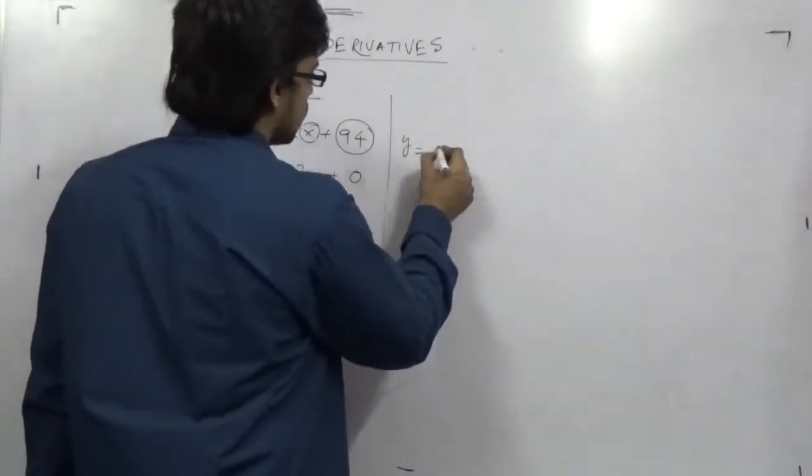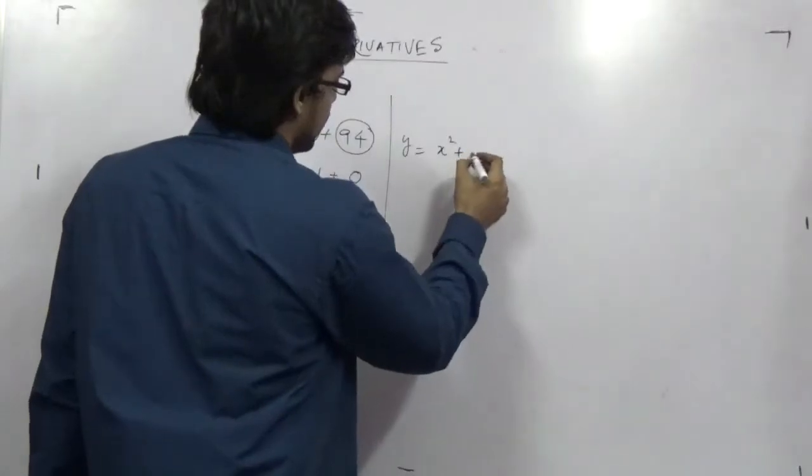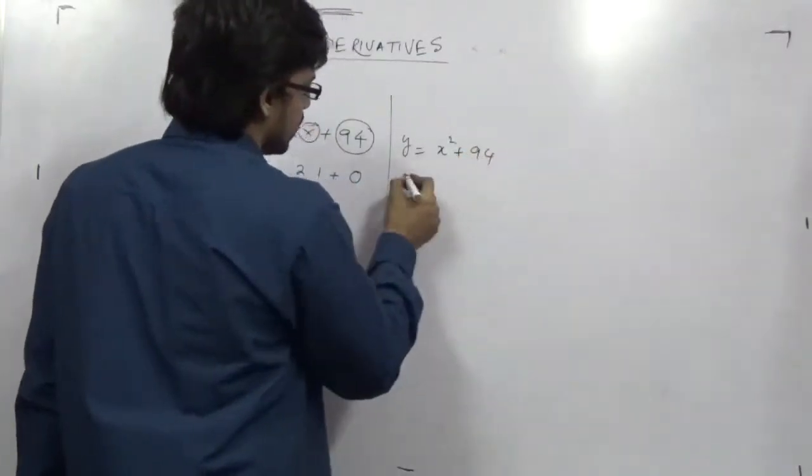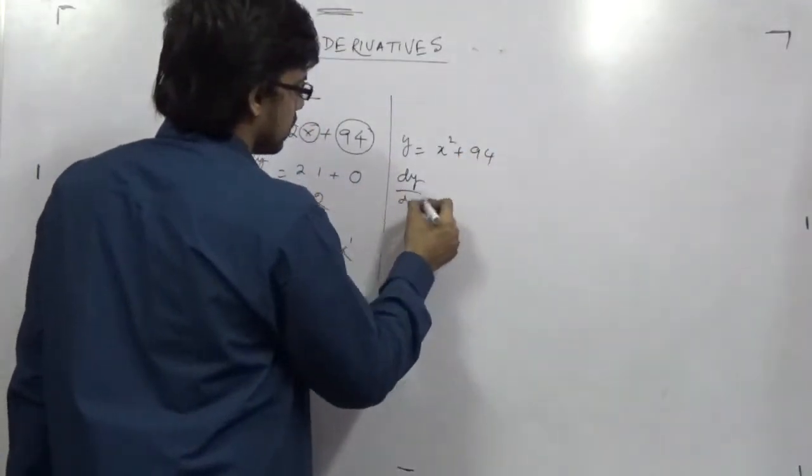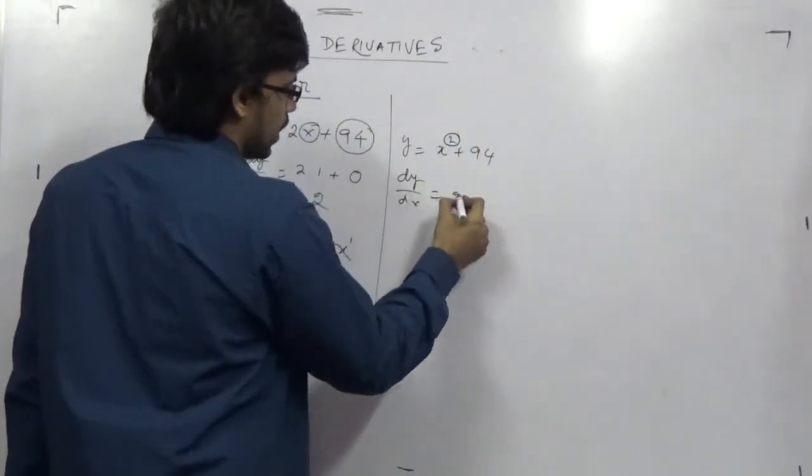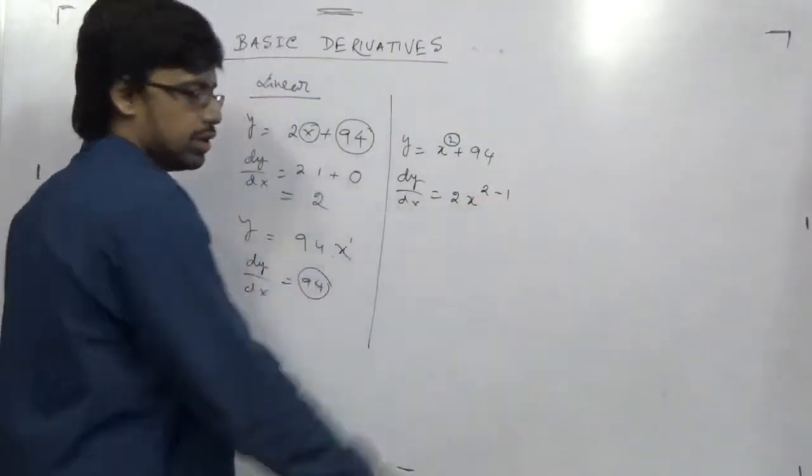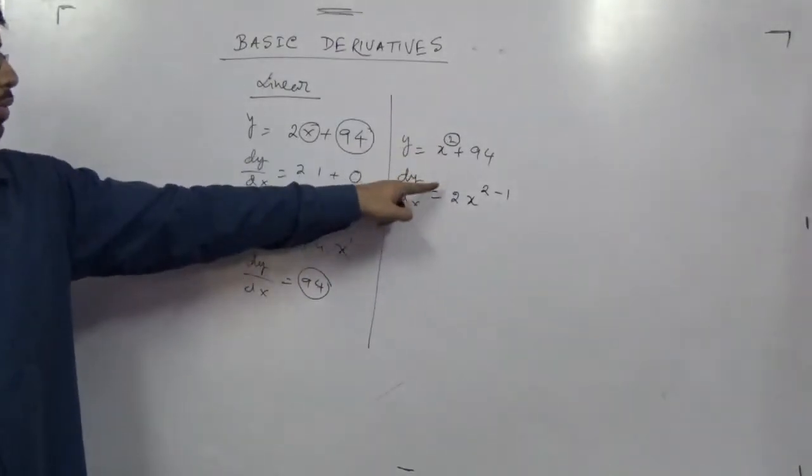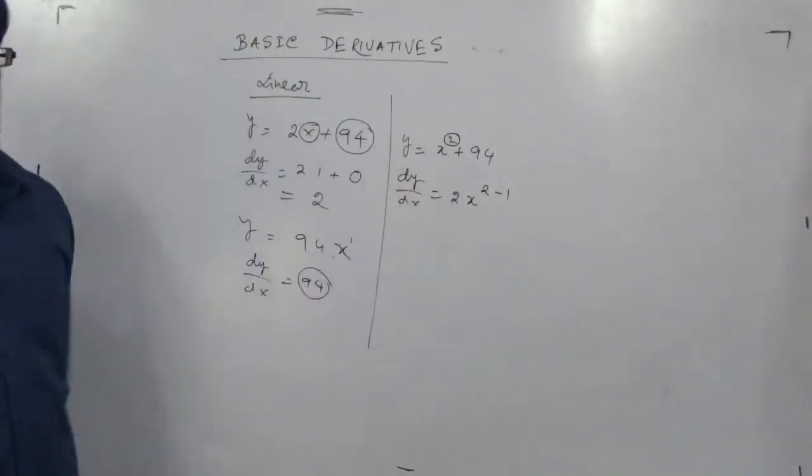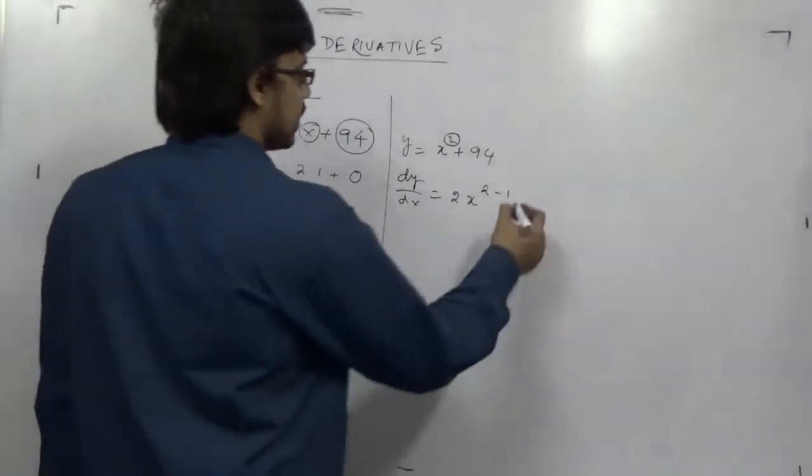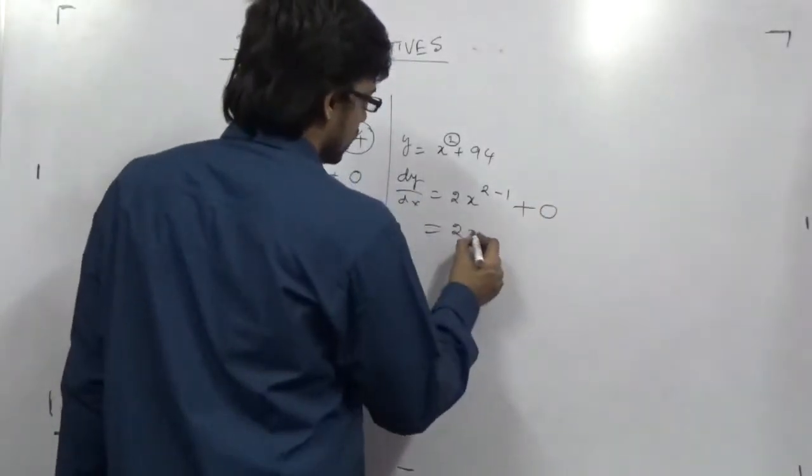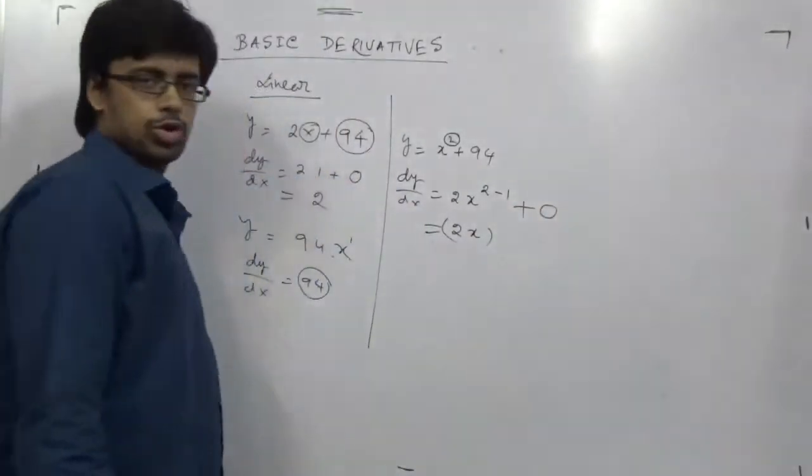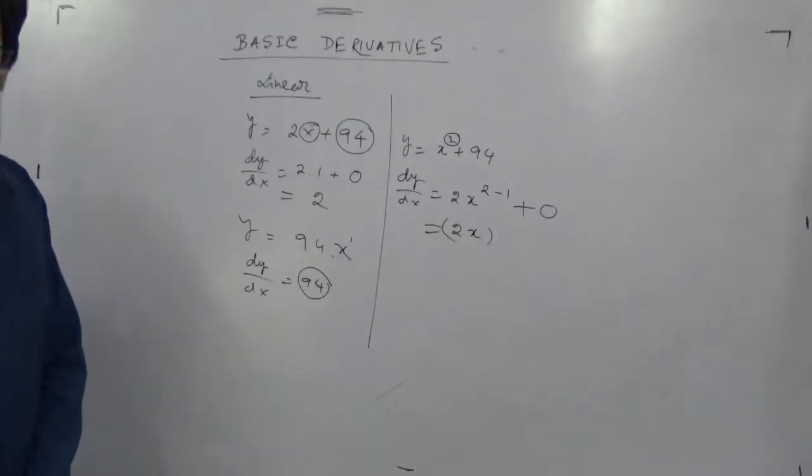Next is a nonlinear. y equal to x square plus 94. So again dy/dx. So this 2 will come down and this power will be reduced by 1. Power will come down and the upper power will be reduced by 1 and this part will be 0. So answer is simply 2x. This is a first order of derivative.